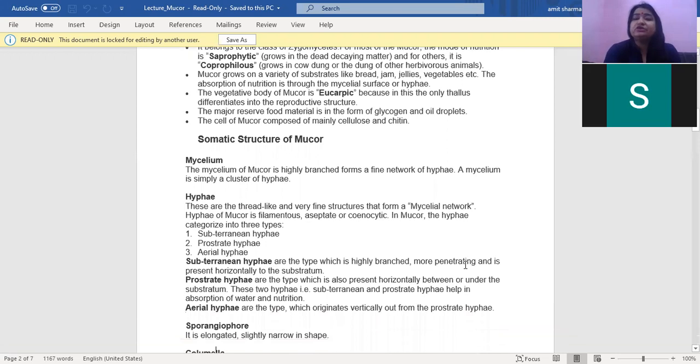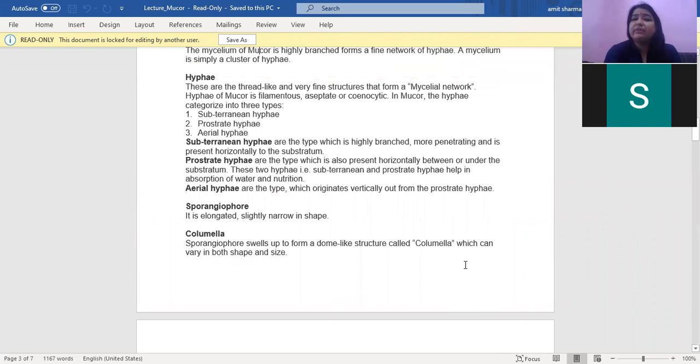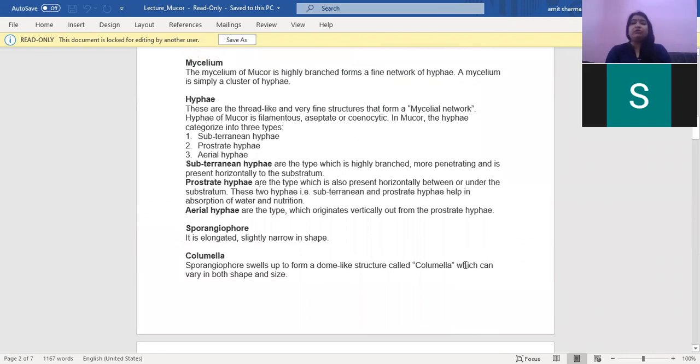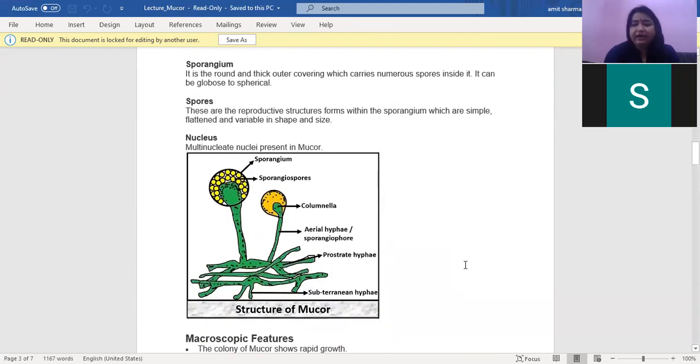Now let us discuss the somatic structure of MUCR. The mycelium of MUCR is highly branched and forms a fine network of hyphae. Hyphae are thread-like and form very fine structure called mycelial network. They are of three types: the subterranean hyphae, the prostrate hyphae, and the aerial hyphae. Please see the diagram.